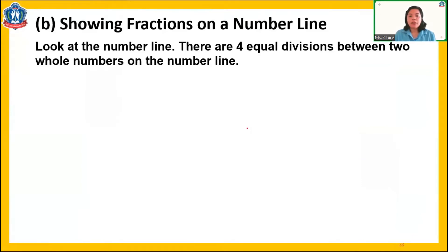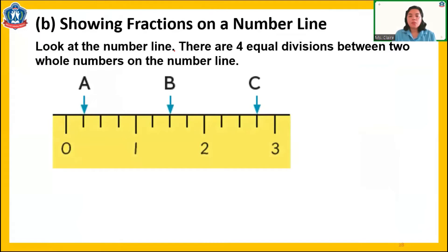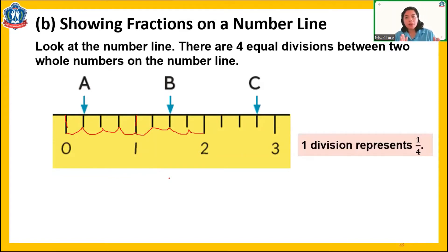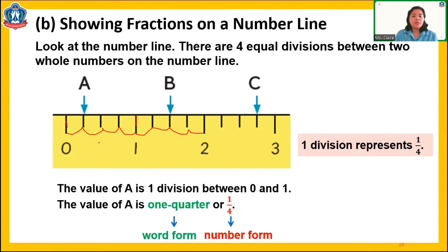Now, showing fractions on a number line. Look at this number line — there are four divisions between two whole numbers. From zero to one, let's find how many divisions: one, two, three, four. So there are four divisions. Therefore, if a whole is divided by four, one division means one quarter. So the value of A is one division between zero and one — the value is one quarter. One division is one quarter. Two divisions is one half or two quarters. Three divisions is three quarters. And four divisions is one or four quarters.